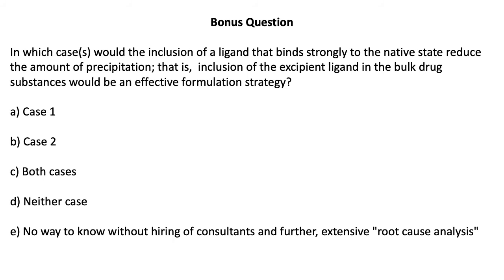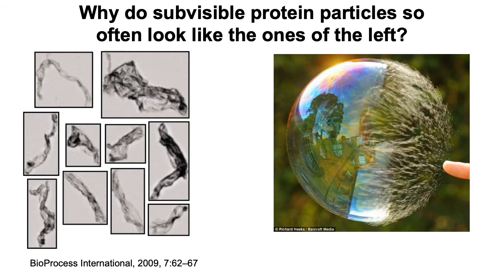A bonus question to think about: what happens if we have a strong binding ligand? This actually helps in both cases. In case one, a strong binding ligand increases solubility. Whereas in case two, a strong binding ligand stabilizes the native state, which leads to less unfolding and irreversible aggregation. So knowing mechanistic insights into how things work can be very helpful to solving these practical problems.